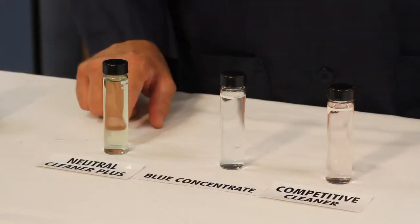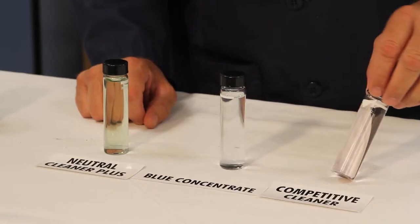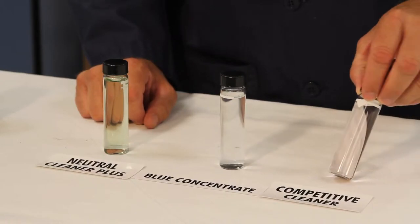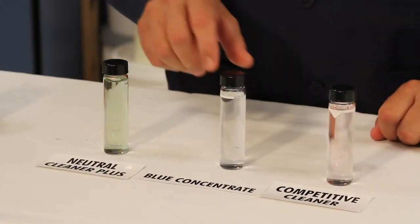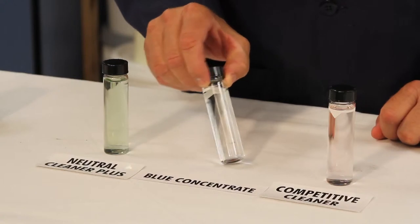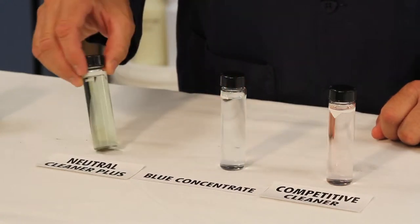In front of me I have three vials of ready-to-use cleaner. The first vial is a competitive product, the second vial is blue concentrate, and the third vial is neutral cleaner plus.